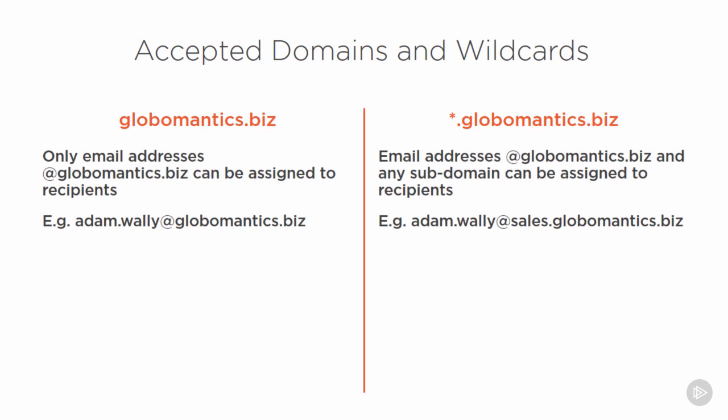So if you add globomantics.biz to the Exchange organization as an accepted domain, then only email addresses at globomantics.biz can be assigned to recipients — for example, adam.wally@globomantics.biz. If you add an accepted domain using a wildcard, then email addresses at globomantics.biz and any subdomain can also be assigned to recipients — for example, adam.wally@sales.globomantics.biz.